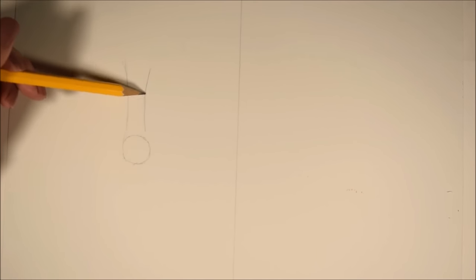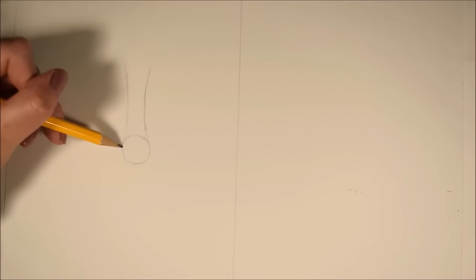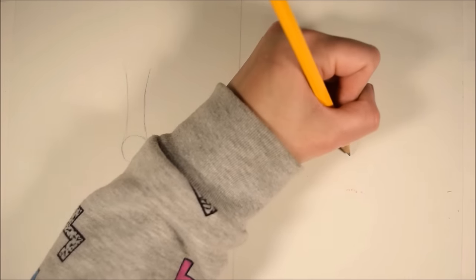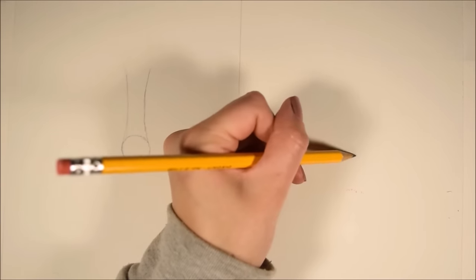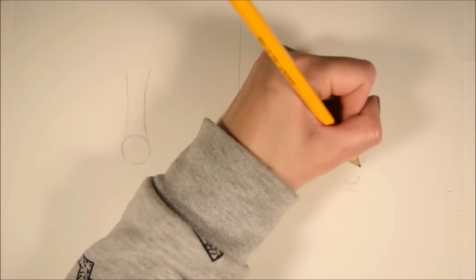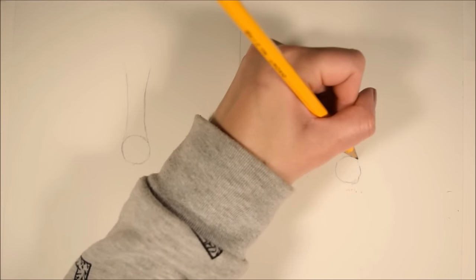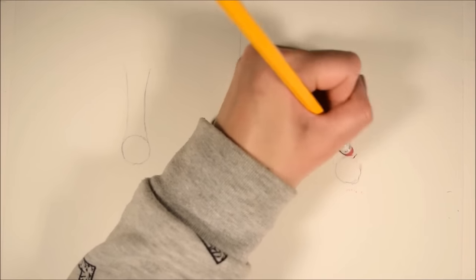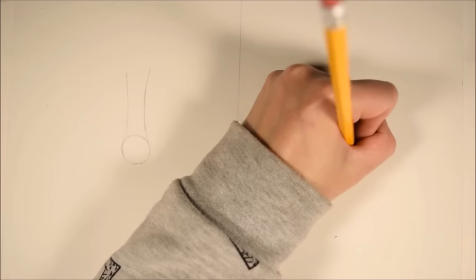Now that we got the bulb done, I'm going to start working on the bridge of the nose. And how I'm doing that is drawing two upward lines that slightly curve into each other. I want to try to avoid making them perfectly straight.